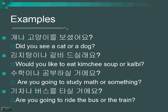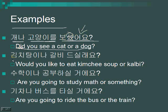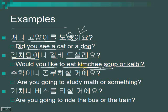Here are some more examples. 개나 고양이를 보셨어요? — Did you see a dog or a cat? That uses the honorific and past tense. 김치탕이나 갈비 드실래요? — Would you like to eat kimchi soup or galbi? 김치탕 is kimchi soup, and galbi is also a great option — personally I'd choose galbi.